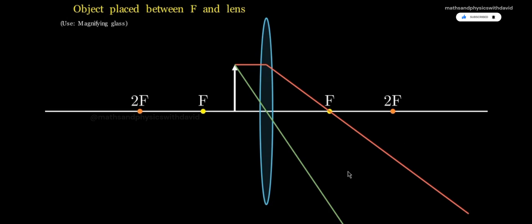The rays now diverge, but if you extend them backward, they appear to meet on the same side of the lens as the object. Here, the image is virtual, upright, and magnified.